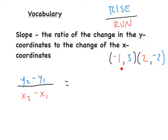Let's look at two coordinate points to understand what y2, y1, x2, and x1 mean. For the first coordinate, this is x1 and y1. For the second coordinate, this is x2 and y2. All you have to do is plug in the numbers for the corresponding y2, y1, x2, or x1.